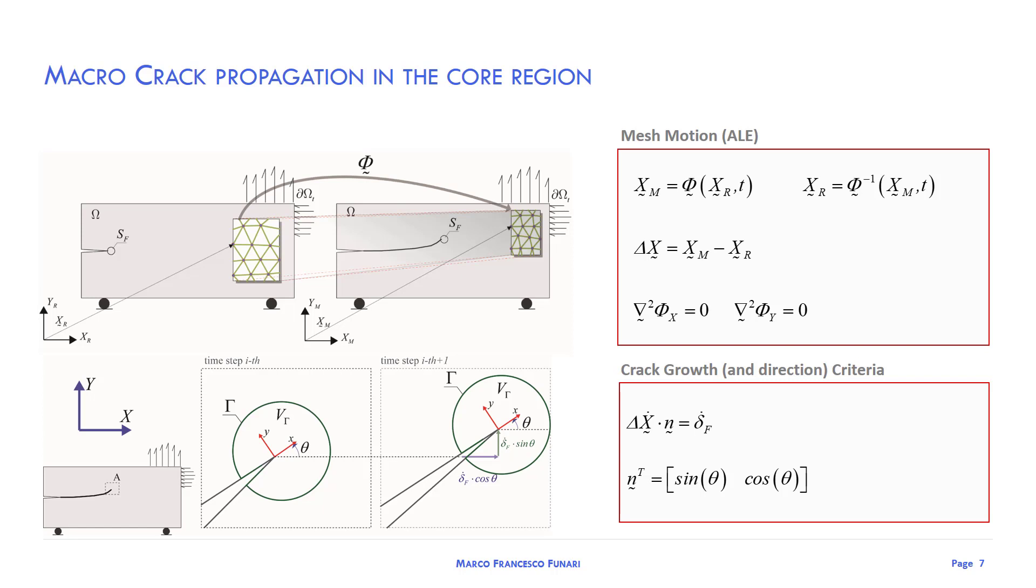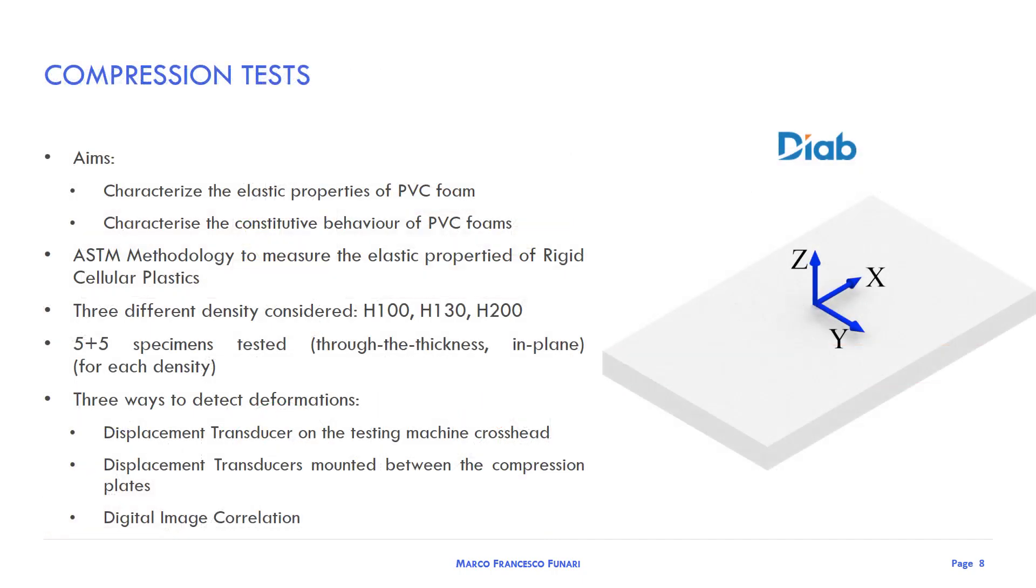Let me introduce the experimental campaign performed on the semi-rigid PVC foam. Detecting the elastic parameters of this kind of material is extremely challenging. Indeed, in literature several authors have proposed different setup tests to remove the parasitic effects produced by the compliance differences between the foam and the test machine. The main aim of this experimental campaign was to characterize the elastic properties of PVC foam and the constitutive behavior.